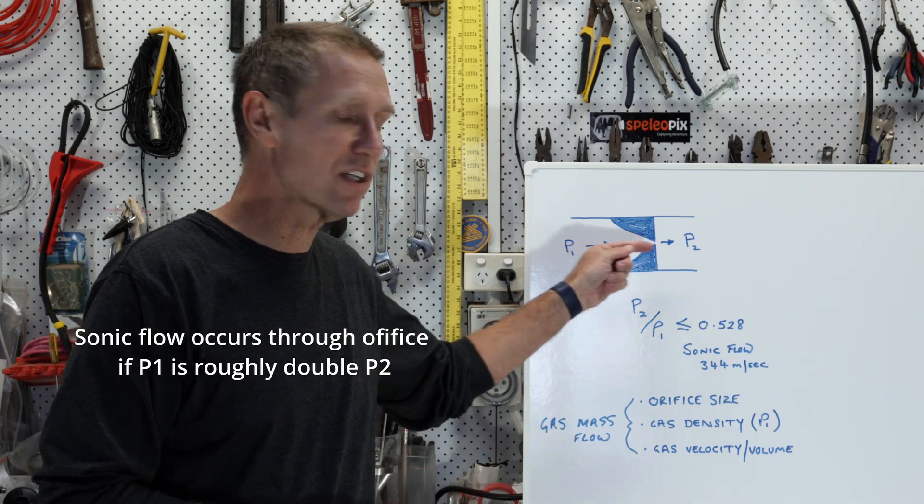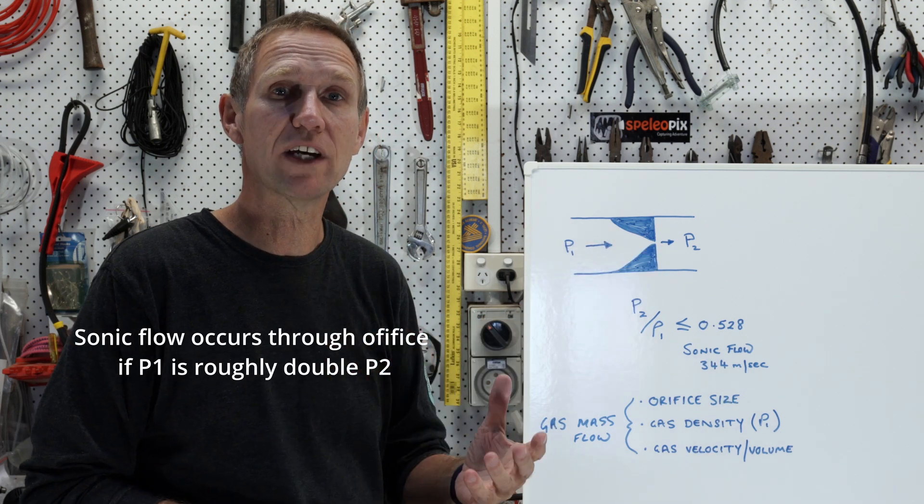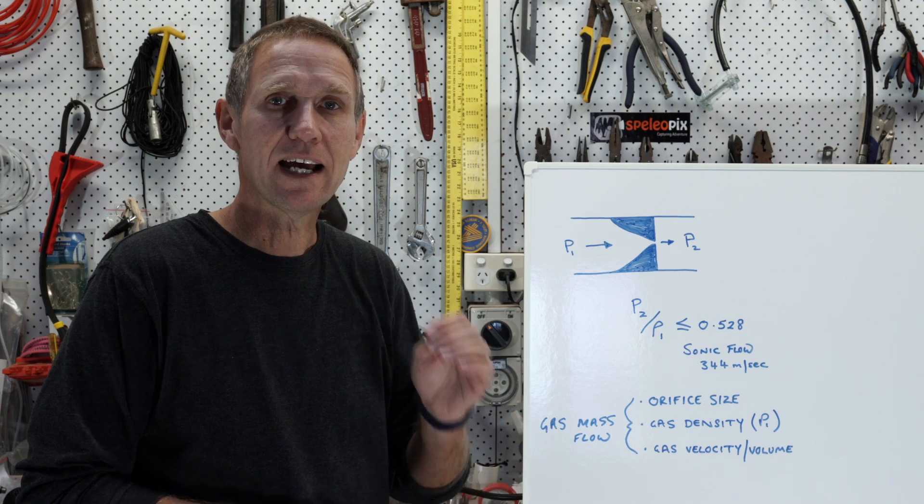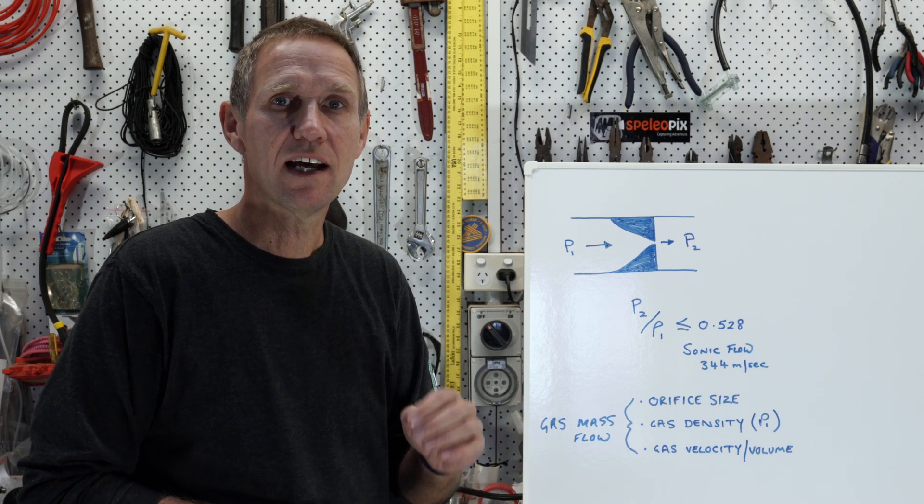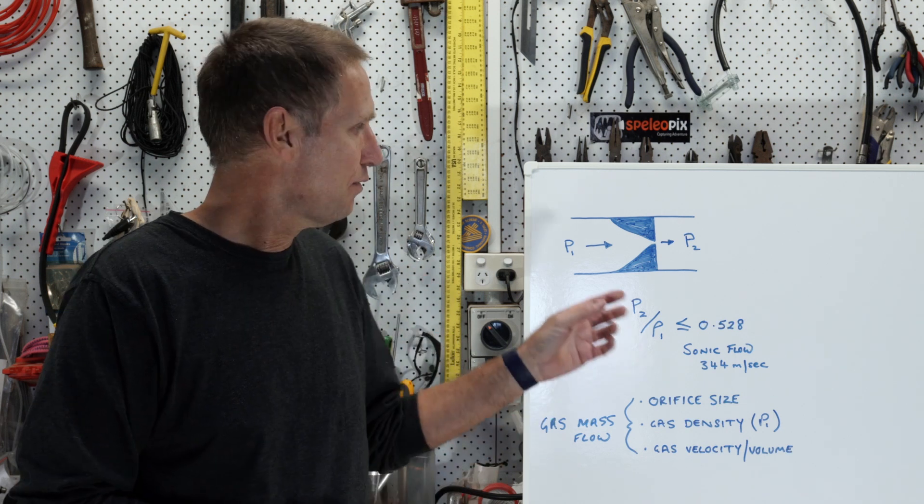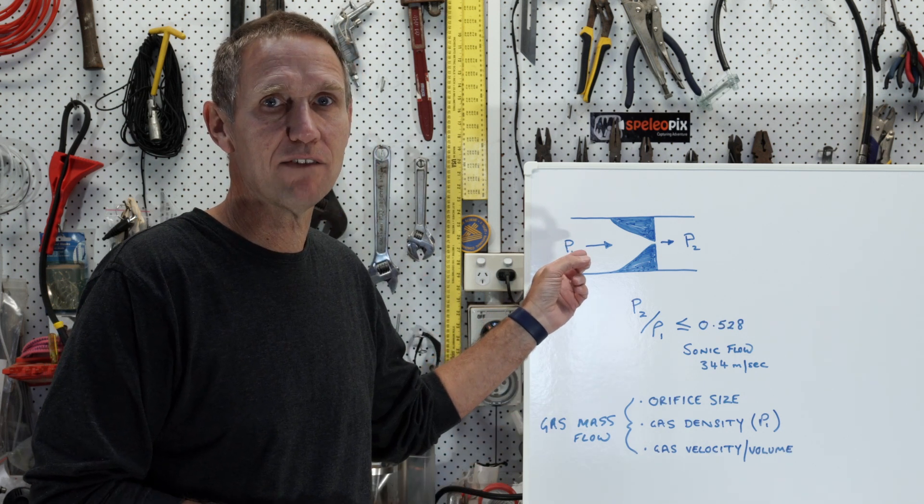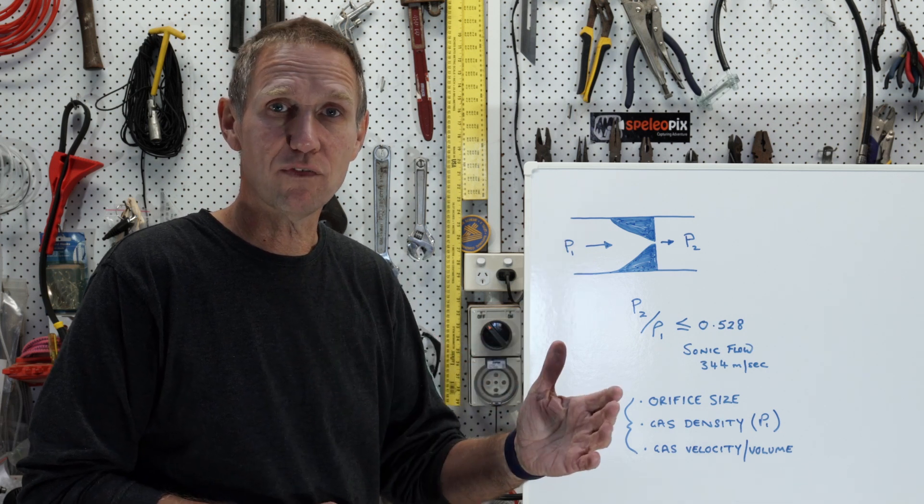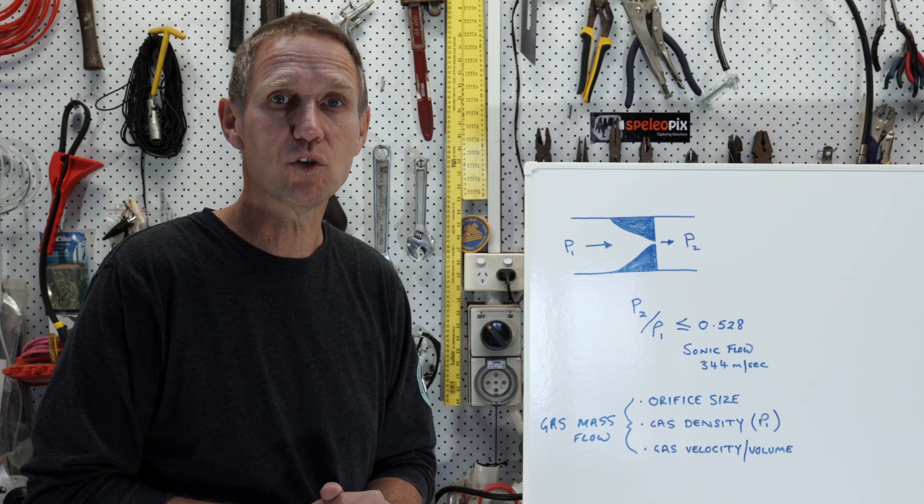Now sonic flow means that the gas passing through that orifice will be actually moving at the speed of sound, 344 meters per second. And under those conditions, essentially the system becomes very, very stable. If you increase P1 even further, the velocity of the gas flowing through the orifice will not change.